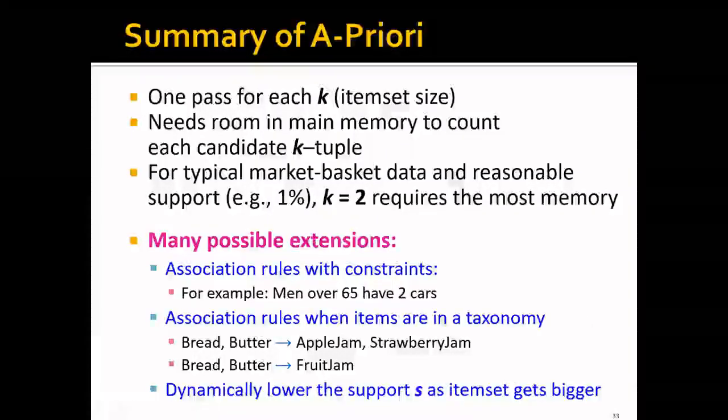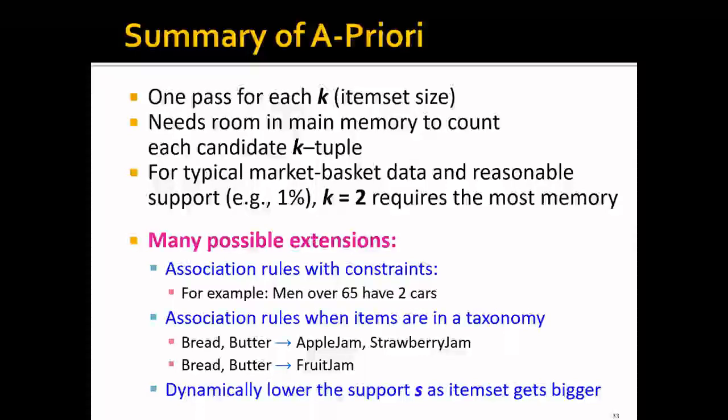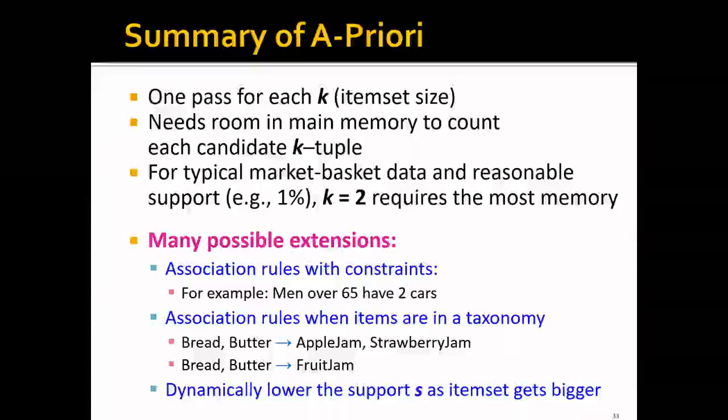In summary, you can see that we will need one pass for each K, where K is the item set size. And so we will need the room in the memory to count each candidate K tuples. We'll need the room to count the individual items, we'll need the room to count each candidate pairs, we'll need the room to count each candidate triples, et cetera. You might be worried at this point that what if the K becomes too large.